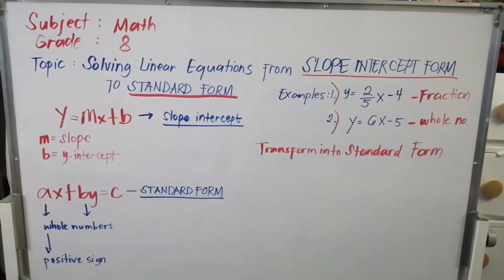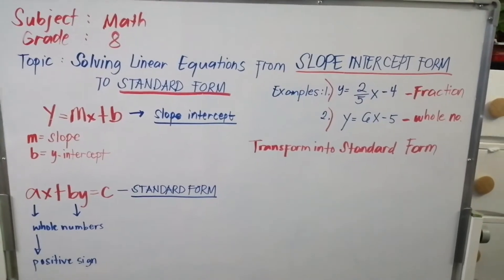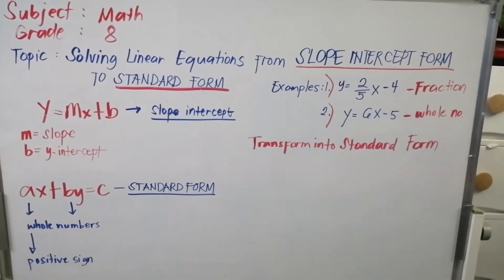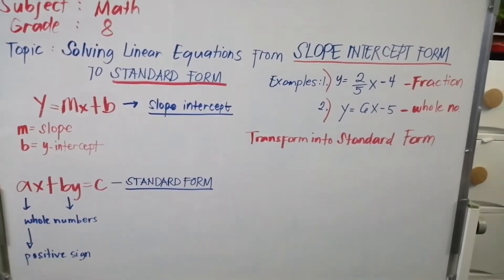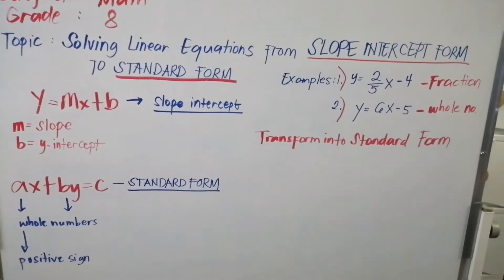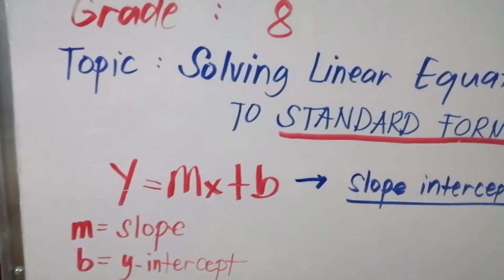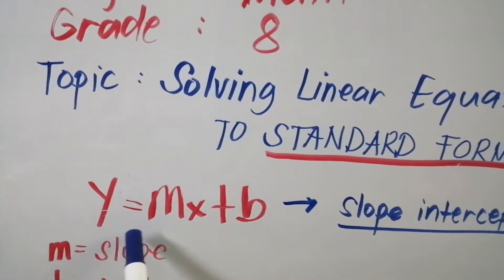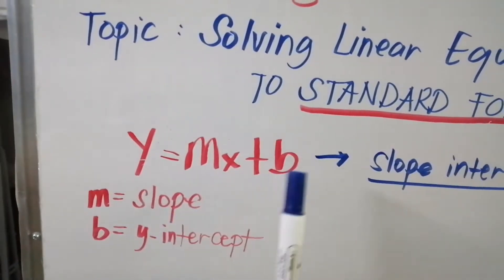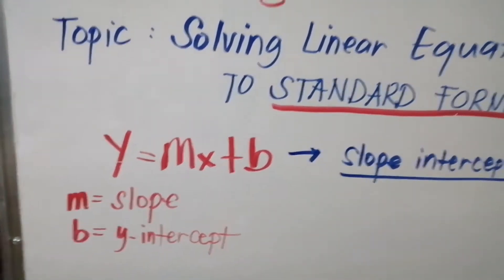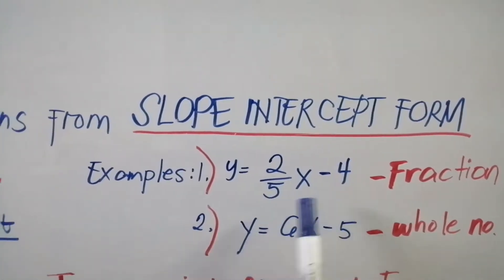Hello junior high students, welcome back to our math tutorial. In this video we are going to learn about slope-intercept form transforming to standard form in two different ways. At first we're going to identify our slope. The slope-intercept form has a formula of y equals mx plus b, where m is our slope and b is our y-intercept.